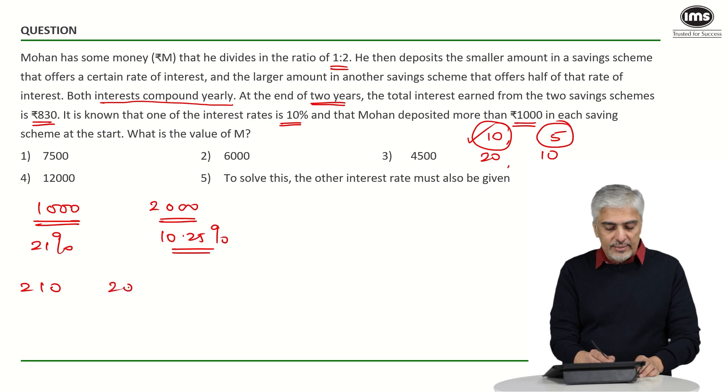So, that is 10.25 into 2 will be 20.5. So, I think it will be 205 rupees. Right? So, what is 210 plus 205? It comes to approximately 415 and the amount over here is double. Sorry, 415 not 425.